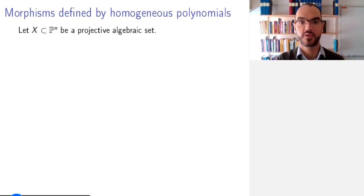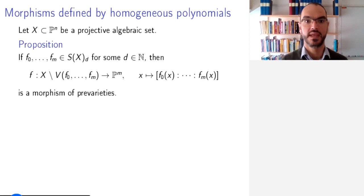So take a projective algebraic set X. Then if you have polynomials f₀ to fₘ that are homogeneous of the same degree d, then you get a morphism of pre-varieties from the set of all points in X where these polynomials do not jointly vanish to ℙᵐ.